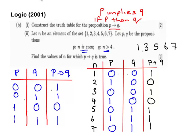Those are the values that we have to pick out. Those are the values for which P implies Q is true. So that's that part done.